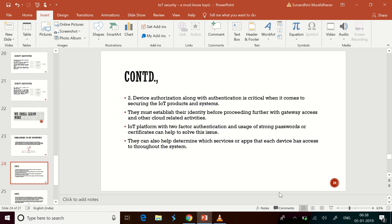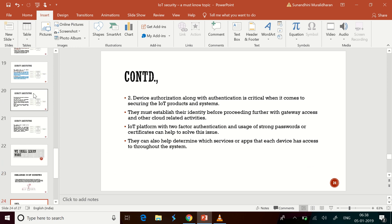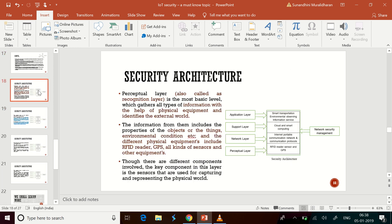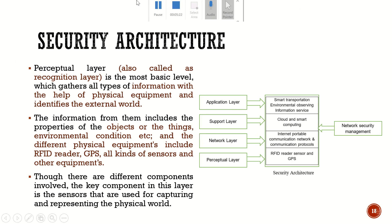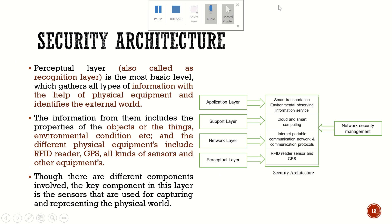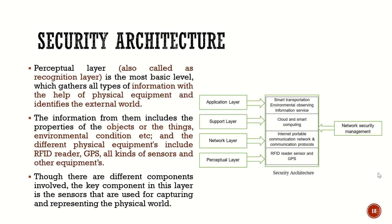Now, understanding what areas we can work on, we also need to think about the security architecture of IoT. The general security architecture we follow largely fits here, but I'll add some context. There are four fundamental layers available for any security-related analysis: the perceptual layer, network layer, support layer, and application layer.